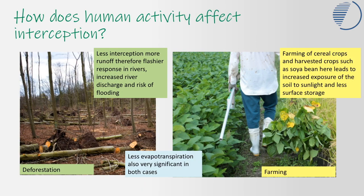Human activity affects interception in a number of ways. Number one is deforestation: if forest cover is lost, there's no foliage to catch incoming precipitation. Therefore we see more surface runoff, which leads to increased water in the river channel and an increased risk of flooding, as we've seen in the tropical forests and the Madeira Basin in the Amazon.